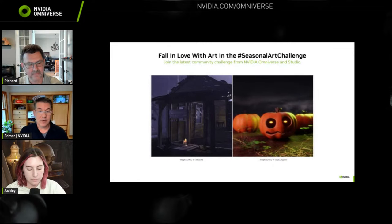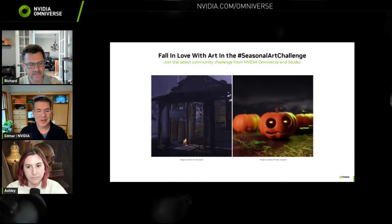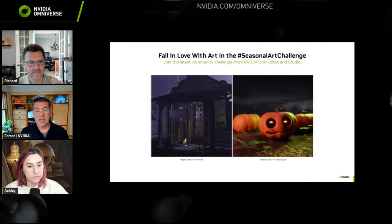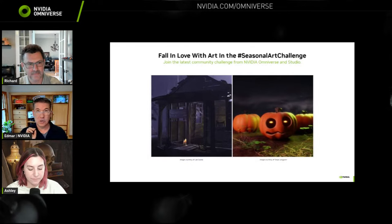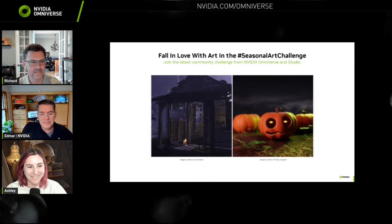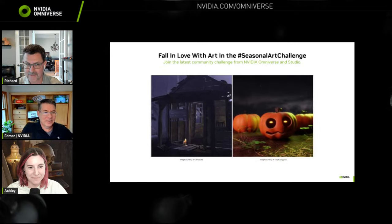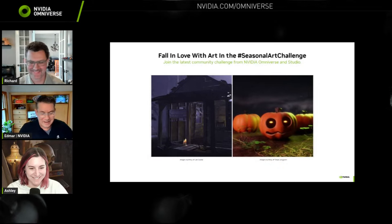We are right in the middle of our seasonal art challenge for October. There are example scenes from Jace Lane, who did Spooky House, and Tanya Langder, who was on our stream a couple of weeks ago. We want to see what you're doing — there's been a lot of cool stuff posted. One of my favorites was just posted on the Discord yesterday. Funky Boy, a.k.a. Stephen Tong, has plans to do four different scenes — yesterday's was a nice Lego Spider-Man 2 scene. Richard taught me something: there's no such thing as 'Legos' — it's always 'Lego.'